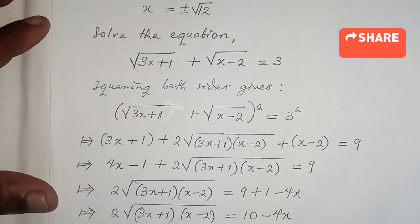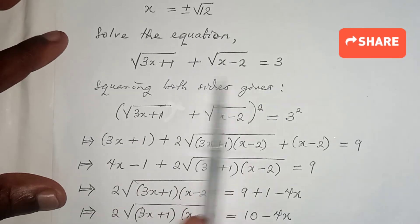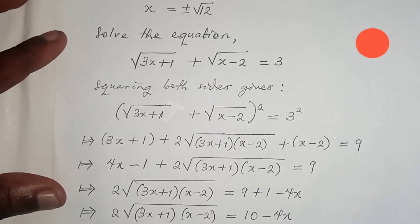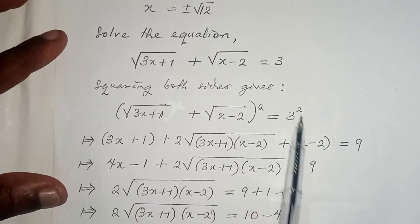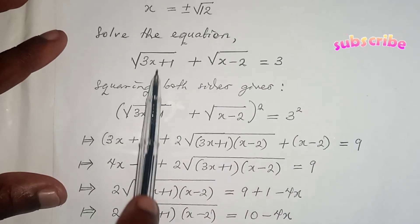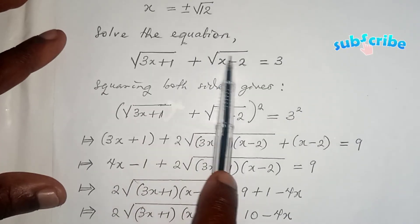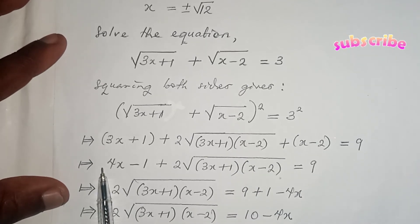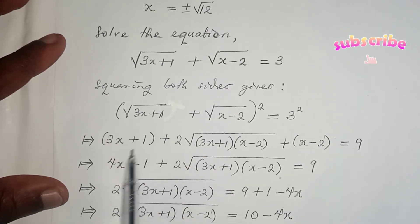Now for the last type: the equation root(3x plus 1) plus root(x minus 2) equals 3. Again you must isolate the radical, but here it is more complex. When you square both sides: 3 squared gives 9; squaring the first radical gives (3x plus 1); squaring the second gives (x minus 2); and the cross term gives 2 times root(3x plus 1) times root(x minus 2).